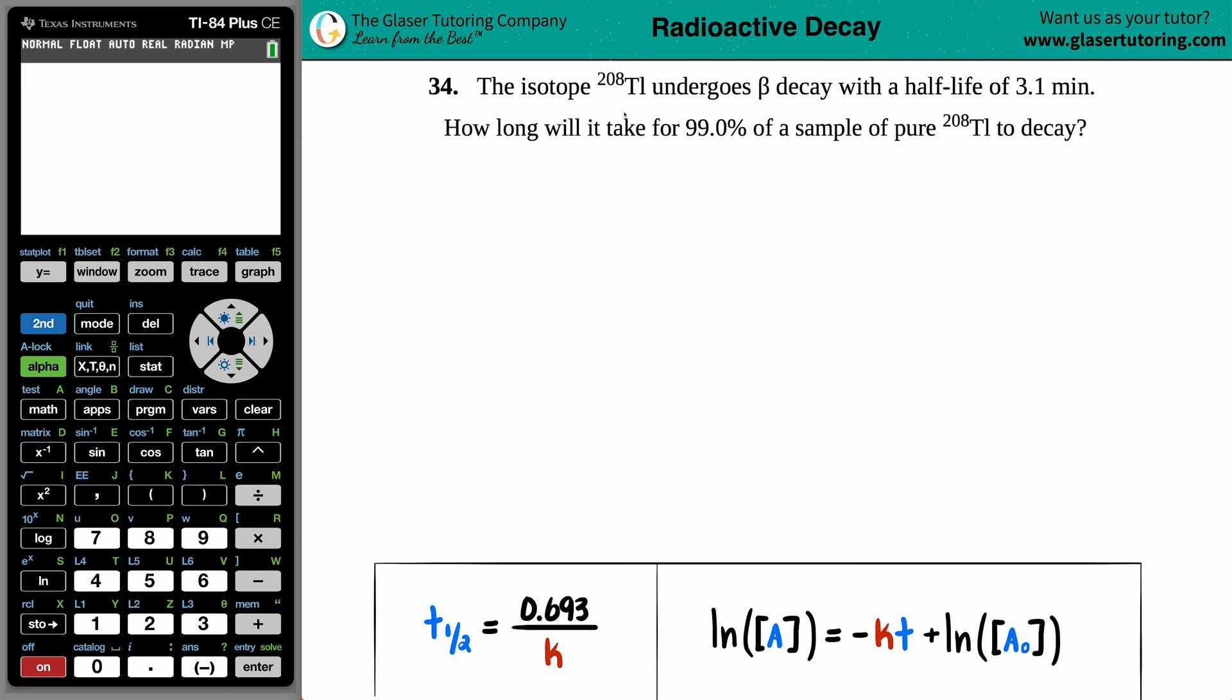Number 34, the isotope thallium-208 undergoes beta decay with a half-life of 3.1 minutes. How long will it take for 99.0% of the sample of that thallium-208 to decay?